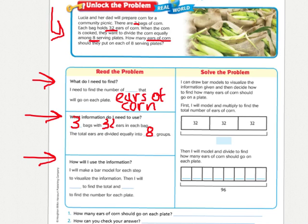How will I use this information? Well, it says let's make a bar model for each step to visualize, to help us understand it. Then you're going to first multiply to find the total, and then I will divide.